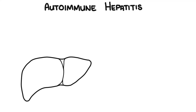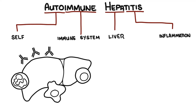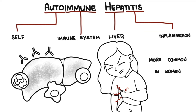Autoimmune hepatitis, as the name suggests, is when the body's own immune cells attack the liver cells, resulting in inflammation. The disease may be asymptomatic initially, or can start as acute hepatitis and progress to chronic liver disease and even liver cirrhosis, which is scarring of the liver. Autoimmune hepatitis is four times more common in women than in men, and it can occur at any age.